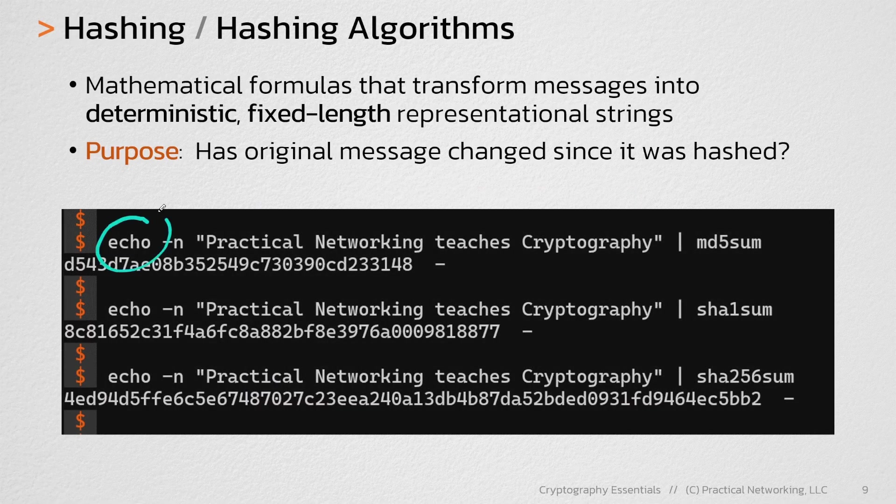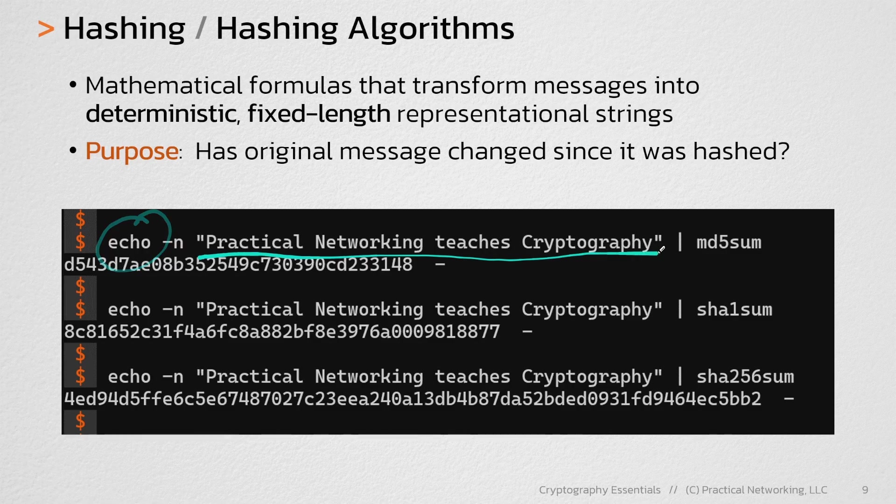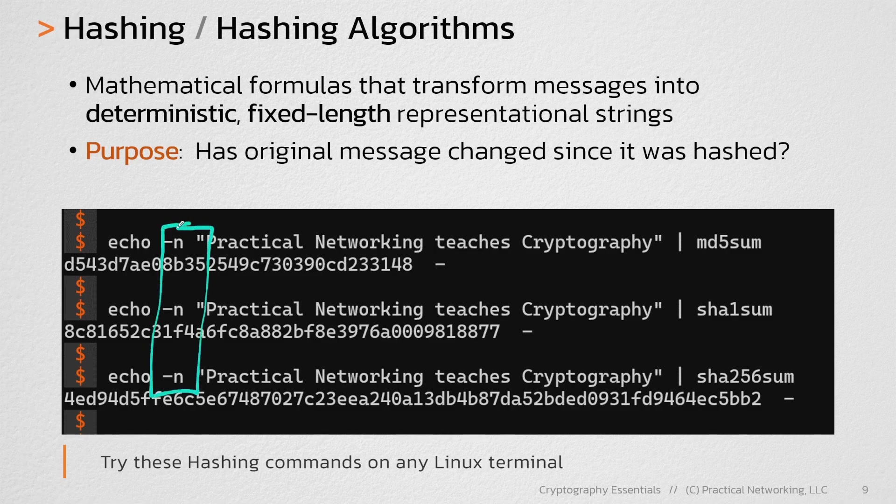Here, I'm using the echo utility to send a string to a particular hashing algorithm. We're using three different hashing algorithms in this example. Each instance of the echo command includes the dash n argument. That prevents the echo command from adding a newline character at the end of the string.